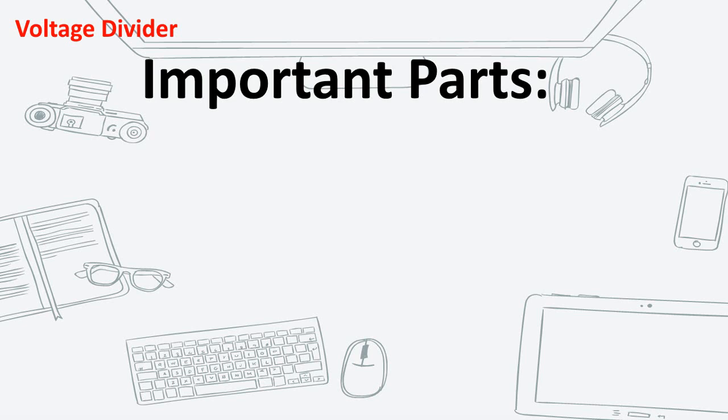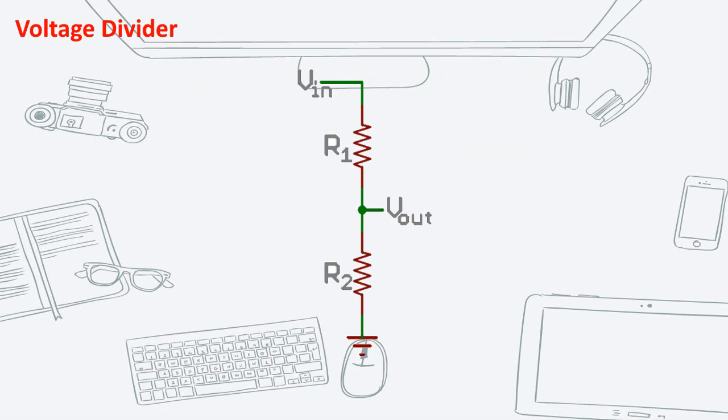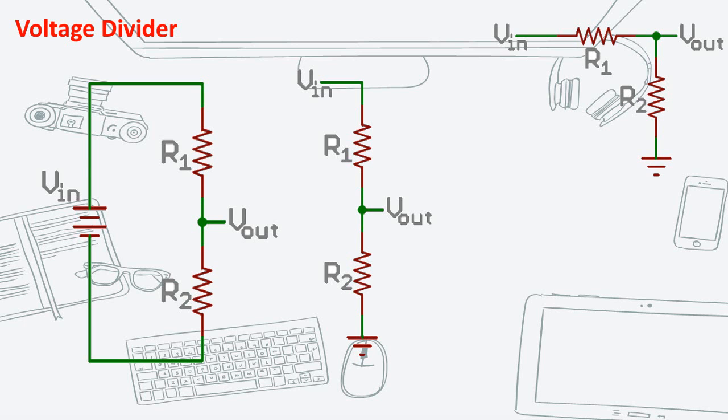When creating a voltage divider circuit, it has two important parts, the circuit and the equation. The voltage divider circuit applies a voltage across a series of two resistors. They could be illustrated in different ways, but they are essentially the same circuit.